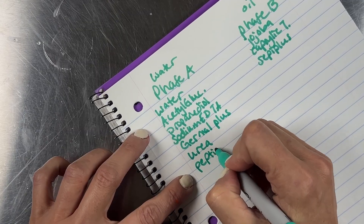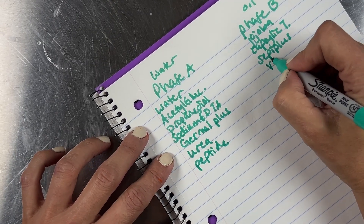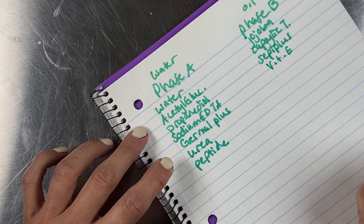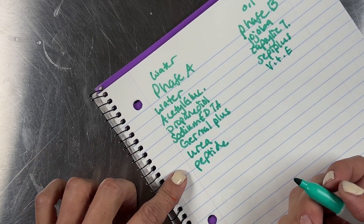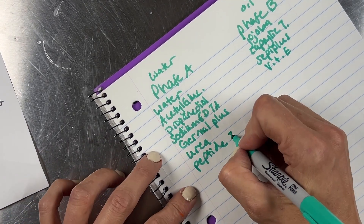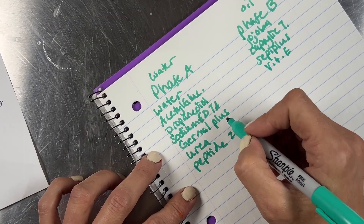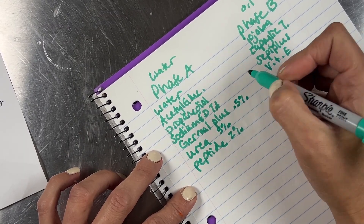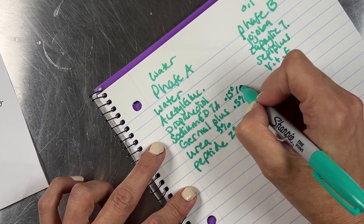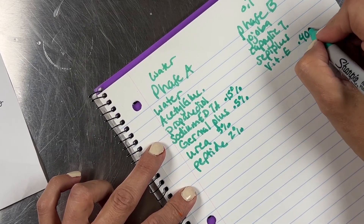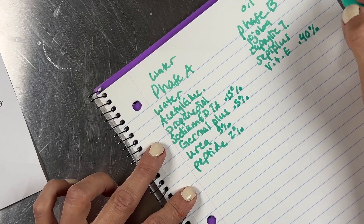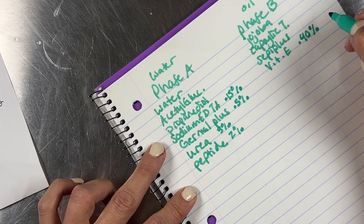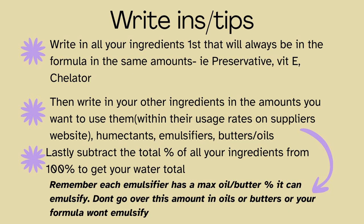I personally build my formulas this way because there are ingredients I'll always use. Everything except the extracts and actives requires things like a chelator — which binds metal ions and essentially helps the preservative — a humectant, vitamin E, and preservatives, which are usually always required, plus actives, extracts, extras, and of course the oils, butters, and/or water. When you know what you want to use, just start filling things in and leave the water for last.